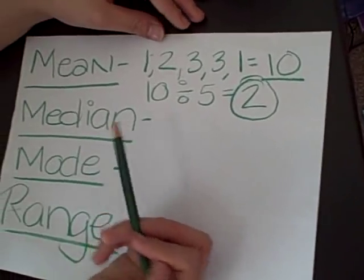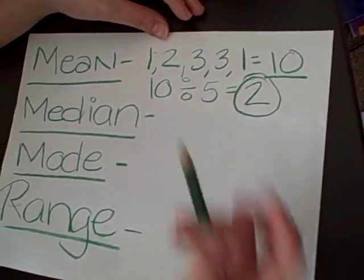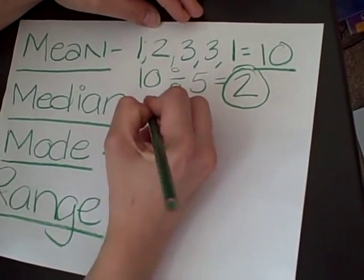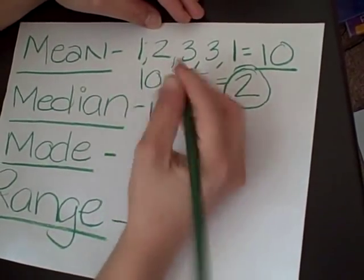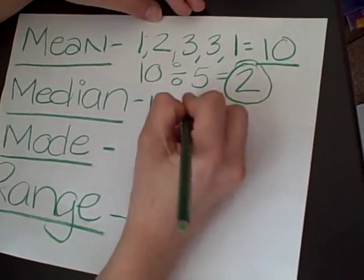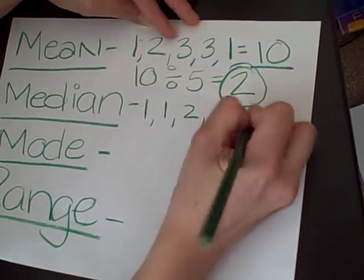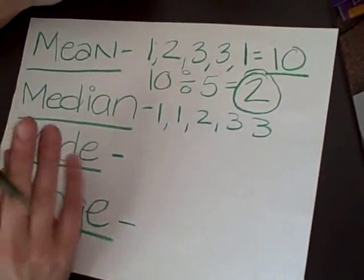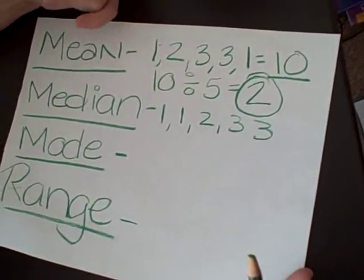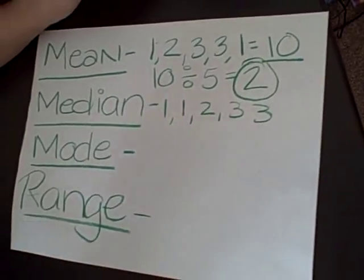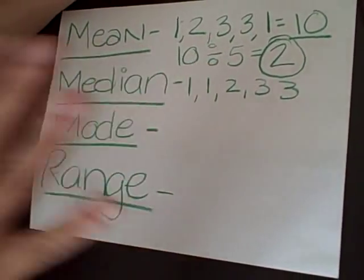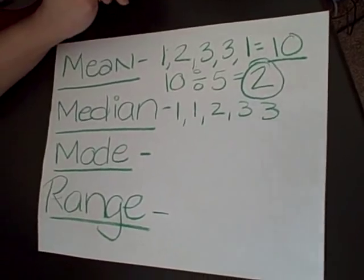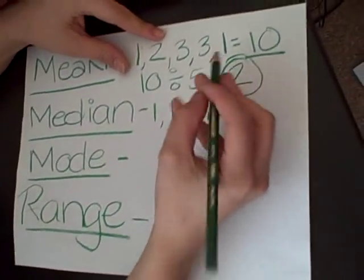Now, median is going to be your middle number. Of course you're going to have to arrange your numbers from least to greatest. So: one, one, two, three, three. How I talk about median is — like when they're driving with their parents, they have the median in the middle of the road. It could be grass, it could be cement — it's the median. So it's going to be the middle number.